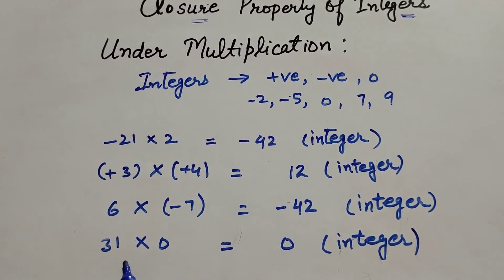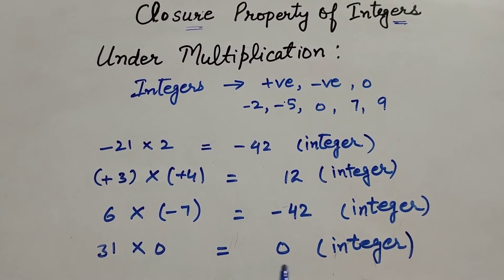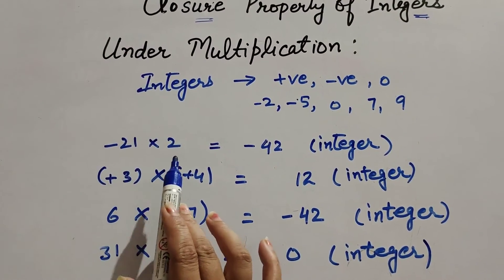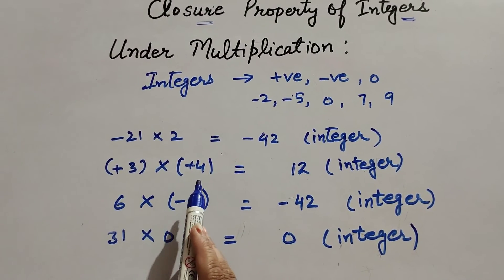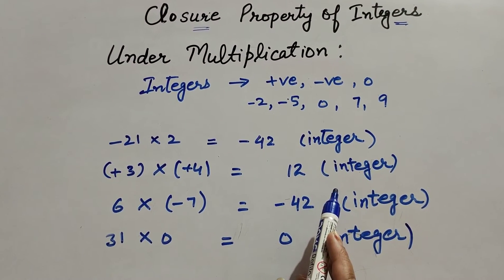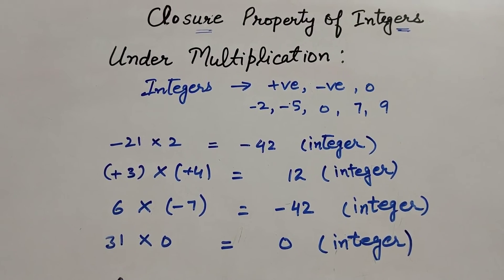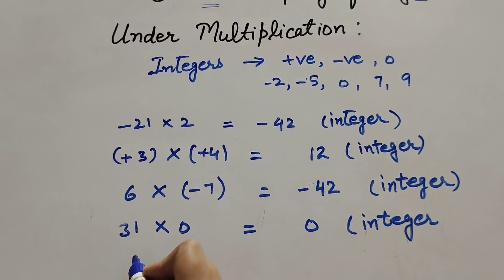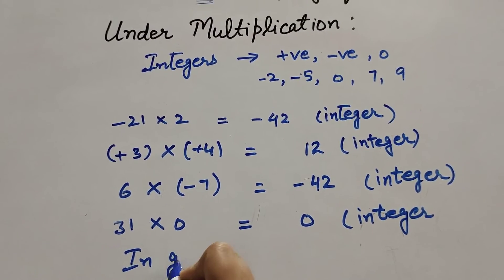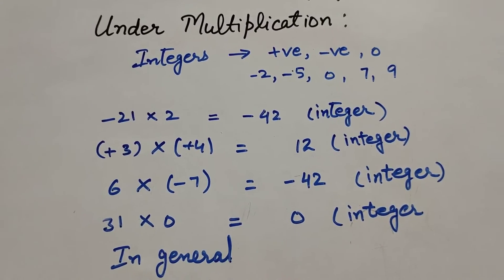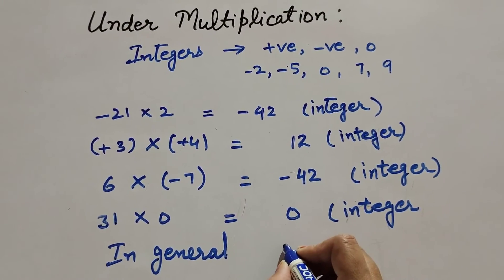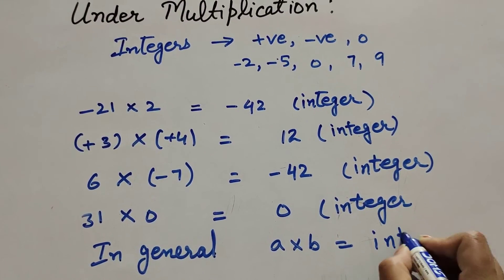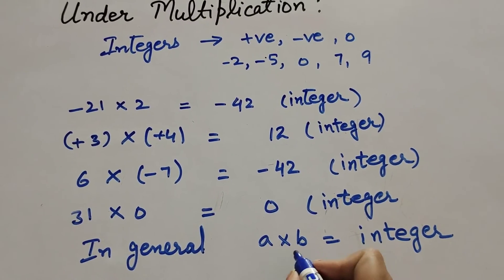So when we multiply two positive integers we get an integer. When we multiply a positive and negative, or negative and positive integer, we get an integer. When we multiply two negative integers we get an integer. In general, if a and b are any two integers and we multiply a and b, then we get an integer — where a times b is also an integer.